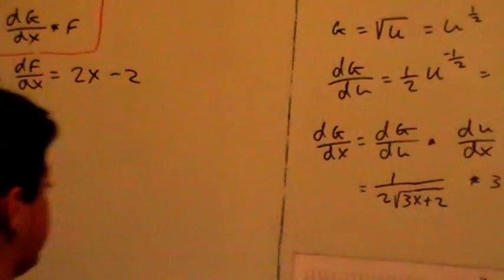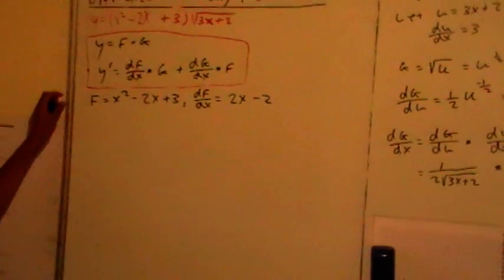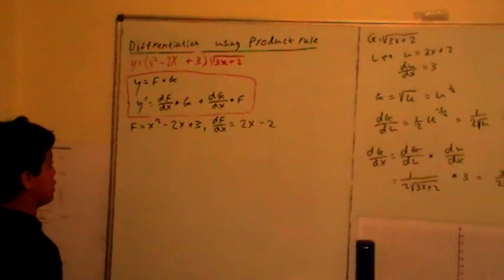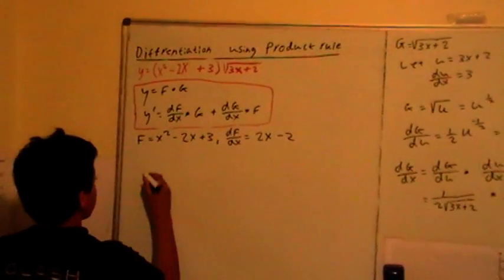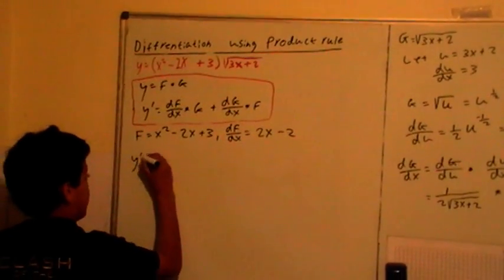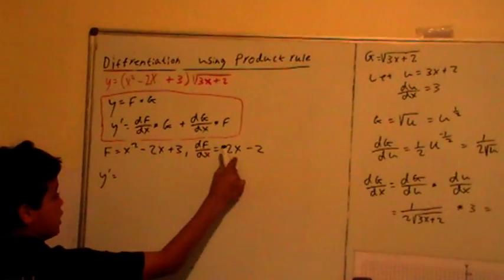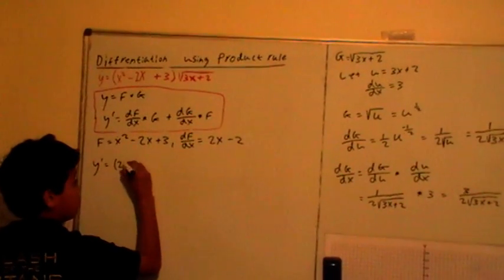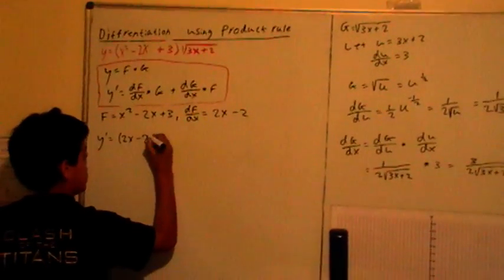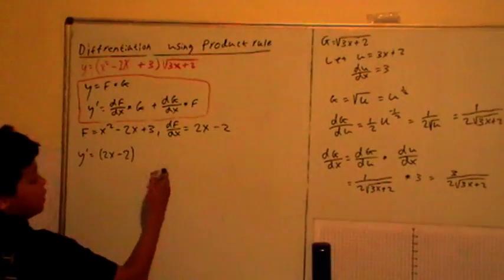Now, we've got dg over dx, we can find y dash of the product function. y dash equals df over dx, which is here. So, bracket 2x minus 2.